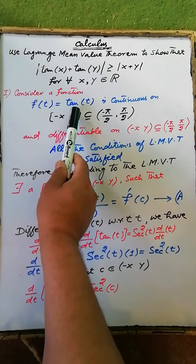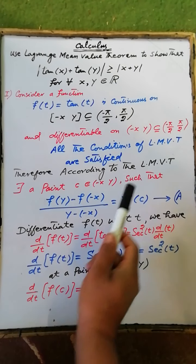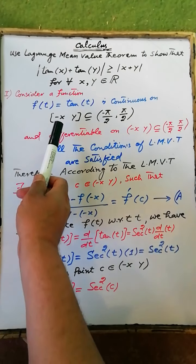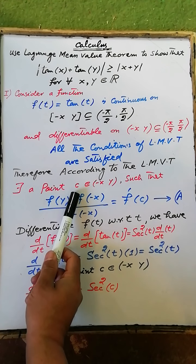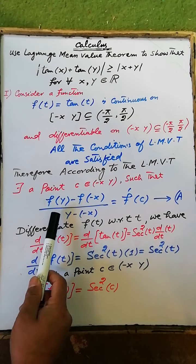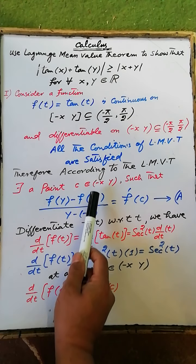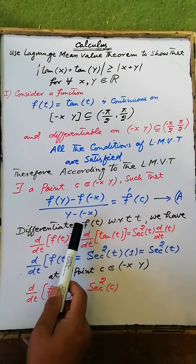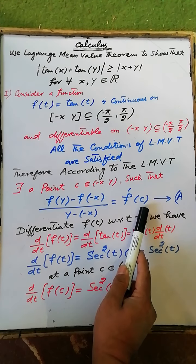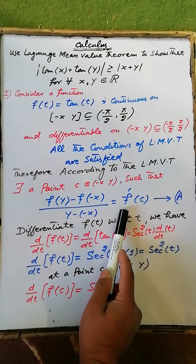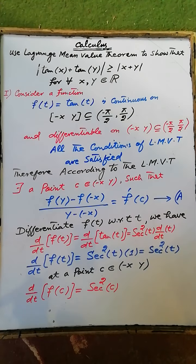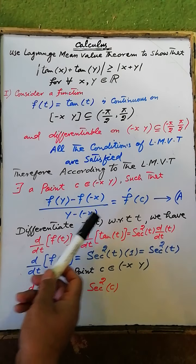Therefore, the function f(t) satisfies all the conditions of the Lagrange Mean Value Theorem. According to the theorem, there exists a point c in this open interval such that [f(y) - f(-x)] / [y - (-x)] = f'(c), where f'(c) is the derivative of the given function at point c.